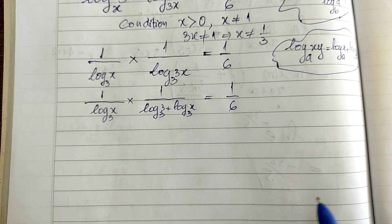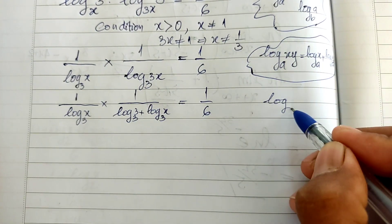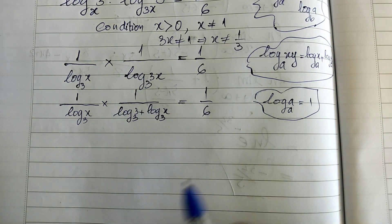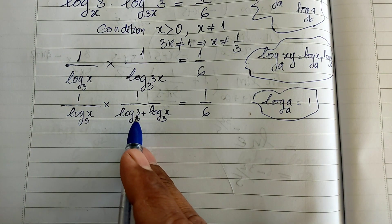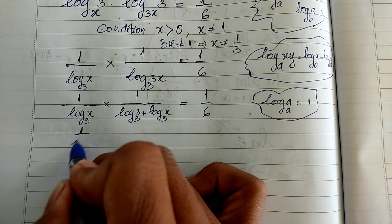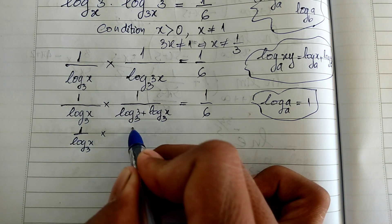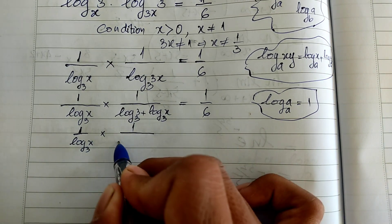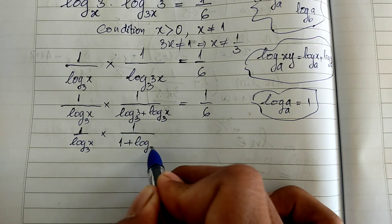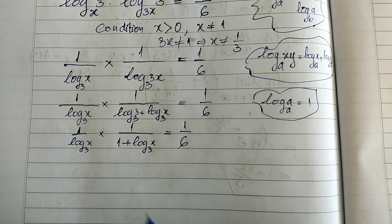Now we use the rule that log base A of A is equal to 1. So log base 3 of 3 equals 1. Therefore I get 1 divided by log base 3 of h, multiplied by 1 divided by the quantity 1 plus log base 3 of h, equal to 1 divided by 6.